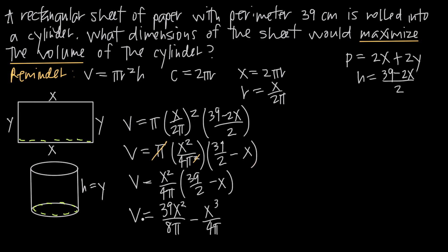Distributing x²/(4π) gives V = 39x²/(8π) − x³/(4π). Now we have the volume equation in terms of one variable, simplified to the point where we can find the derivative. That's always our next step.